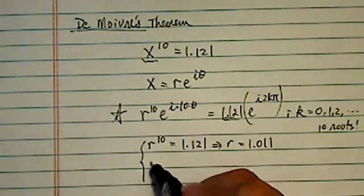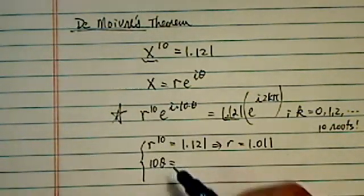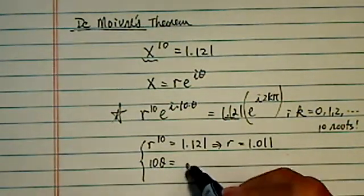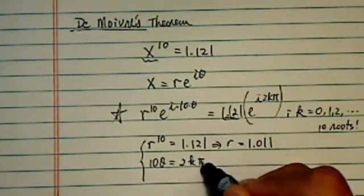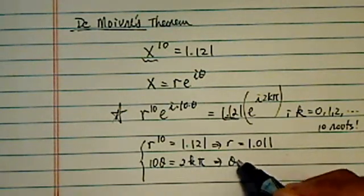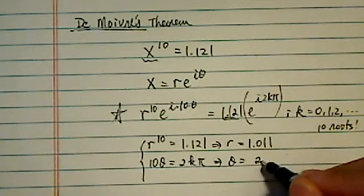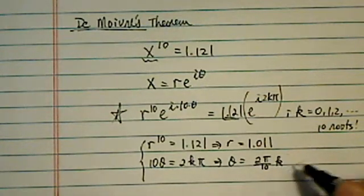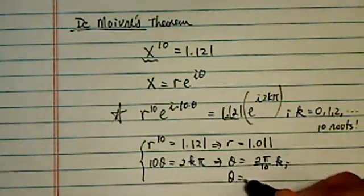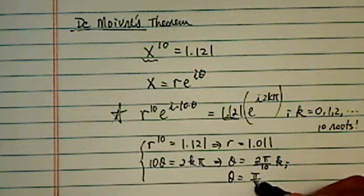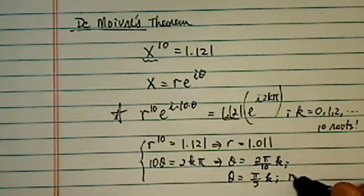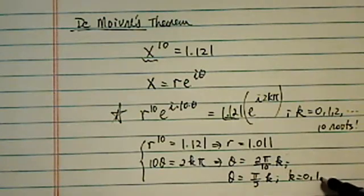And then theta, we have 10 theta is equal to 2k pi. So basically, theta is equal to 2 pi over 10k, or theta is equal to pi over 5k. And k, again, is 0, 1, 2, all the way to 9.